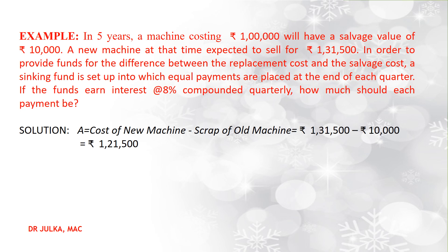In this example, the amount required in the future is the difference between the cost of the new machine and the scrap value of the old machine. Cost of new machine is Rs 1,31,500 and the scrap of old machine is Rs 10,000, so the difference is Rs 1,21,500. The interest rate is 8% compounded quarterly, so i = 0.08 ÷ 4 = 0.02. The fund is required for 5 years with quarterly compounding, so n = 5 × 4 = 20.